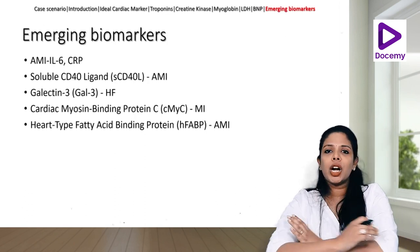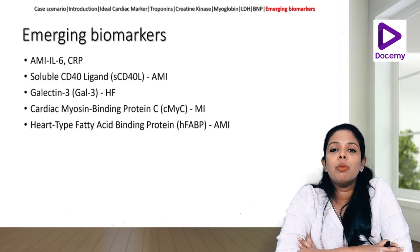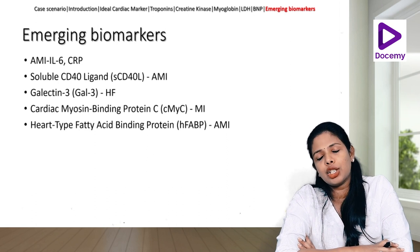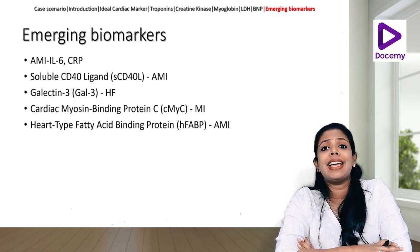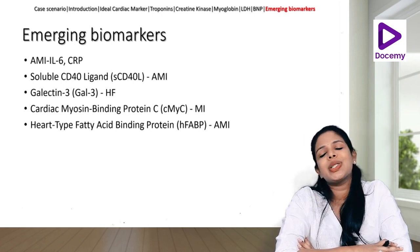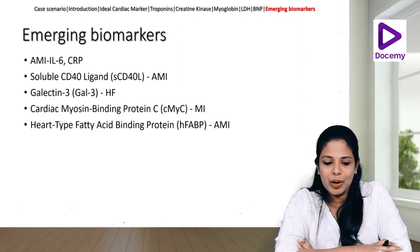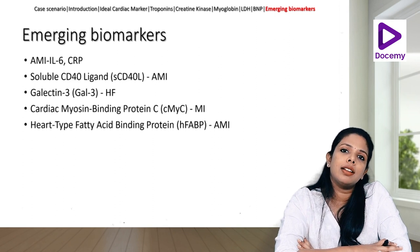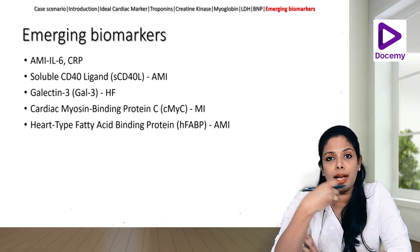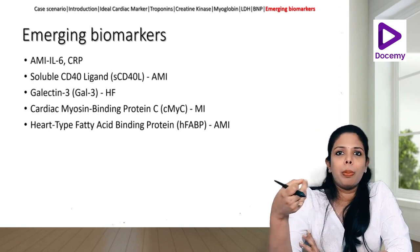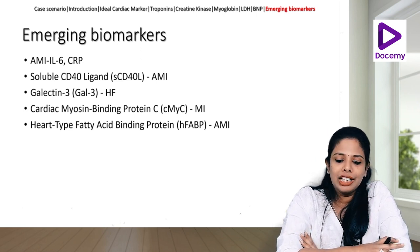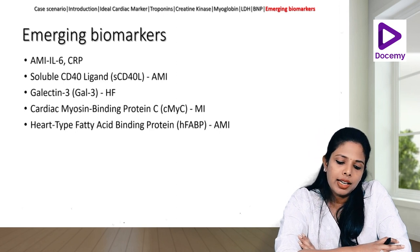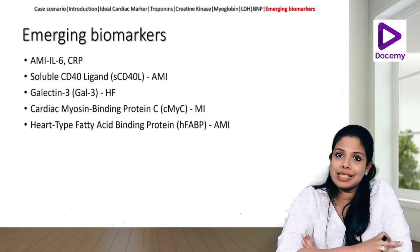Coming to emerging biomarkers: for acute myocardial infarction, IL-6 and CRP are elevated. Be aware that elevated CRP is not always due to infection — it can result from acute myocardial injury itself. Soluble CD40 ligand has been associated in recent studies with prognostic importance in MI, including severity and mortality/morbidity. Galectin-3 is seen in heart failure. Cardiac myosin binding protein and heart-type fatty acid binding protein are also emerging biomarkers for acute MI.